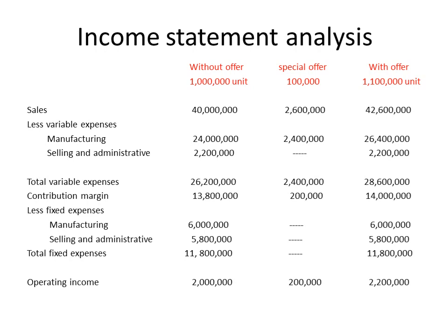Fixed expenses are not affected by the new offer: fixed manufacturing costs = $6,000,000 and fixed selling and administrative expenses = $5,800,000, both remaining the same. Accordingly, operating income before accepting the new offer equals $2,000,000. The special offer increases operating income by $200,000, so after accepting the new offer the total operating income equals $2,200,000.